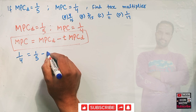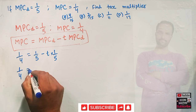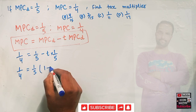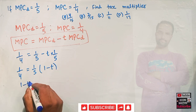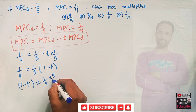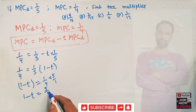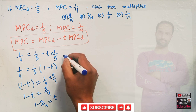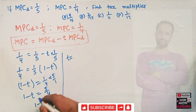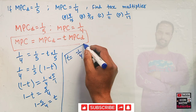We have 1/4 = (1/5)(1 - T), taking 1/5 as common. Transposing, 1 - T = (1/4) ÷ (1/5) = 5/4. So T = 1 - 5/4 = (4 - 5)/4 = -1/4. That is our tax rate T = -1/4.